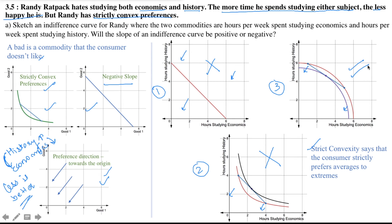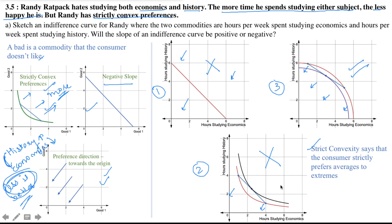This graph passes all three criteria for the indifference curve, so this is the indifference curve for Randy. Note that when dealing with a typical strictly convex preference scenario where more is better, the curve bends differently. Here the opposite shape is strictly convex because less is better and the preference direction is towards the origin — the opposite of the standard case. That's why this shape was not strictly convex whereas the other shape was. Be very careful about the preference direction, as it can change the entire analysis.